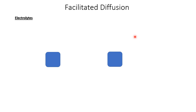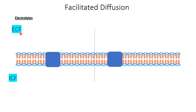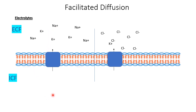Another type of downhill transport is facilitated diffusion. Facilitated diffusion uses channels or carrier proteins to carry out its function, but it does not require any energy. It can transport electrolytes and still moves substances from a region of high concentration to low concentration. For example, potassium ions on the extracellular side can diffuse through a channel into the intracellular side.